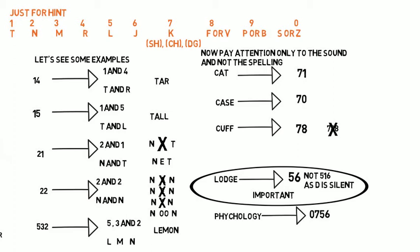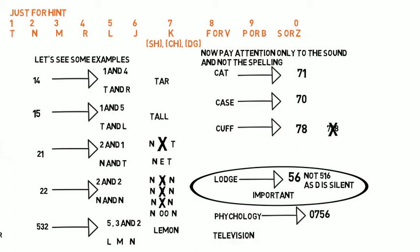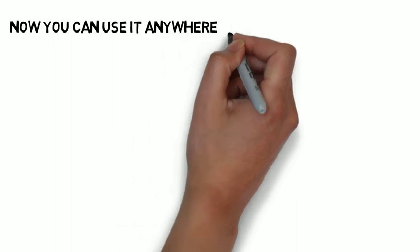Now it's your turn. 'Television': T-L-V-ZH-N — 1 for T, 5 for L, 8 for V, 0 for ZH, 2 for N — giving 15802. You can use this anywhere, in any subject, any situation.